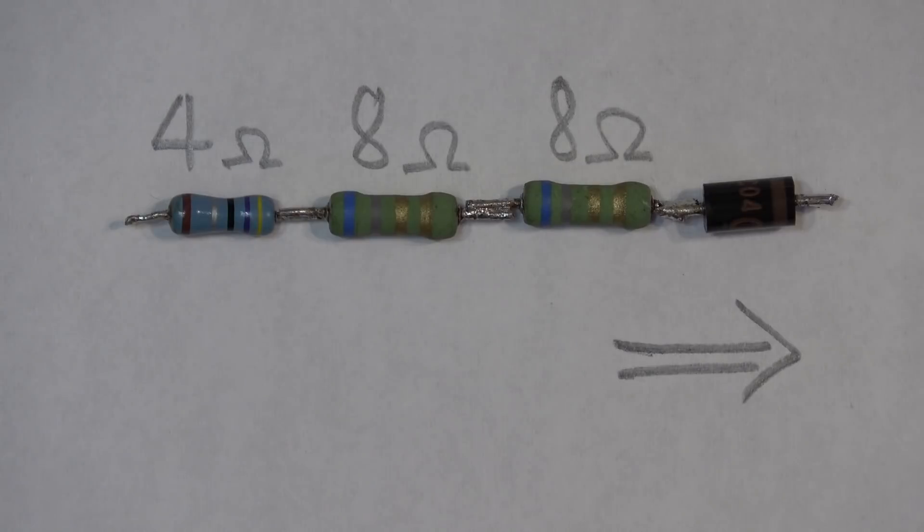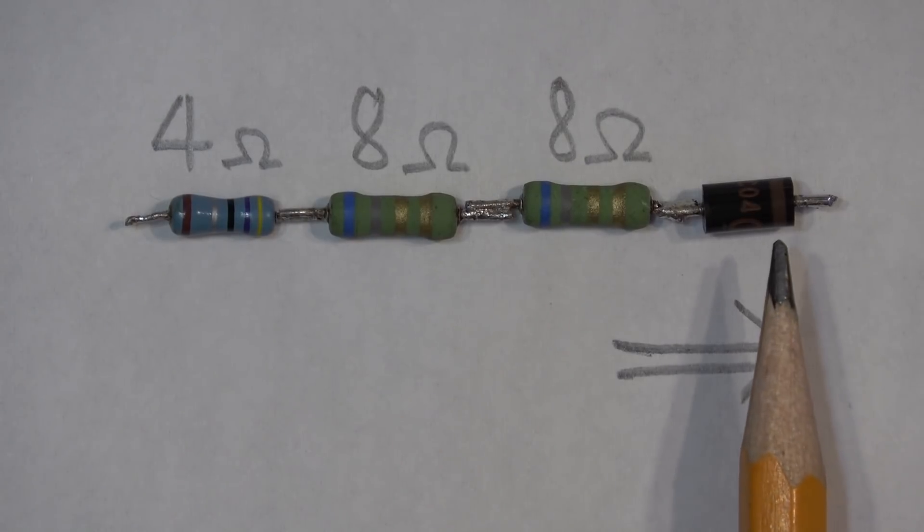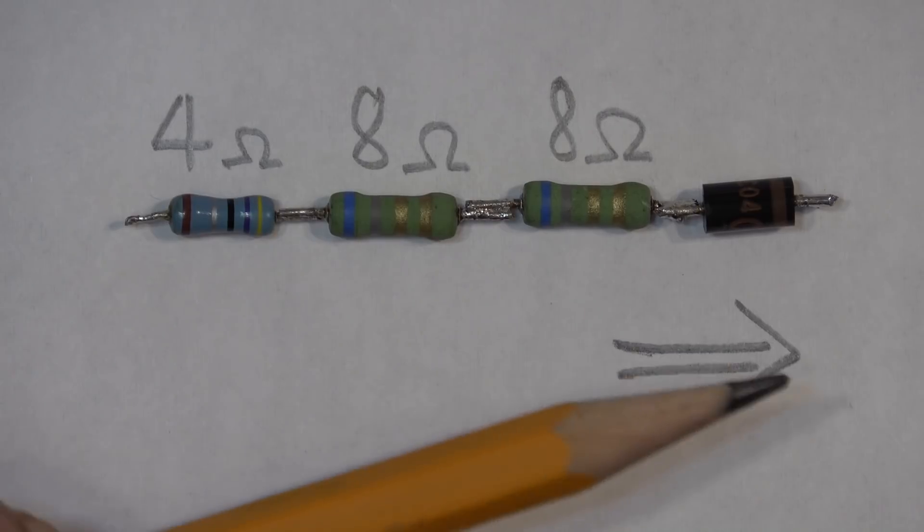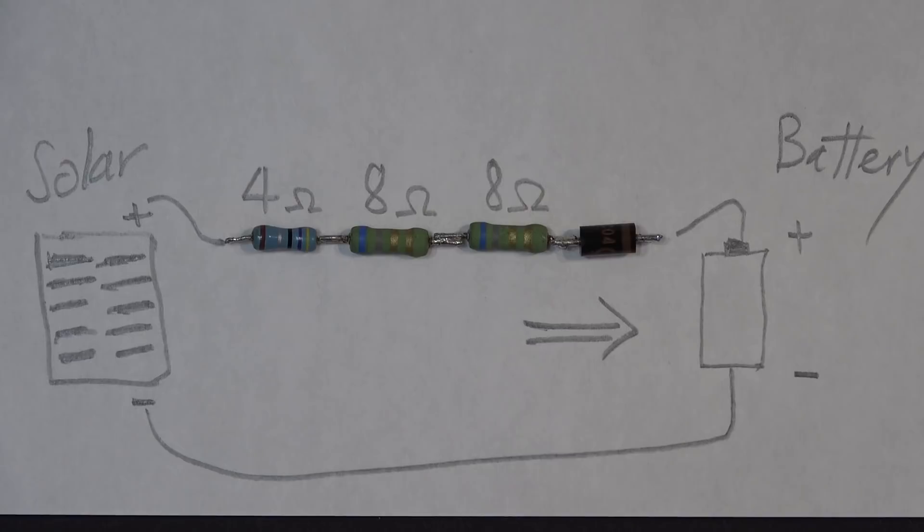This little band right here represents the arrow, so the current is going to flow in this direction. This is the diagram to show you how it's going to be wired together: the solar panel here, battery here. The negative is going to go from the solar straight to the battery.